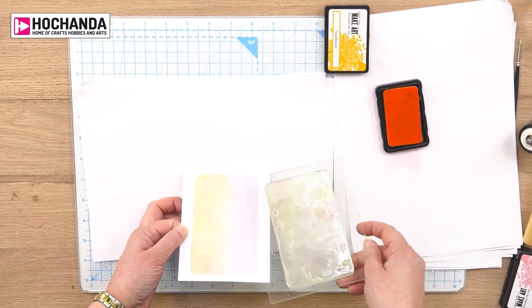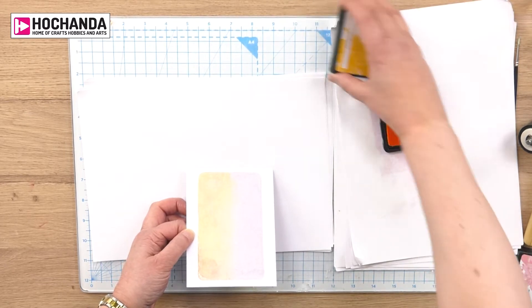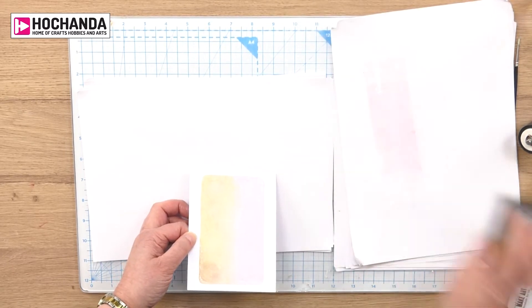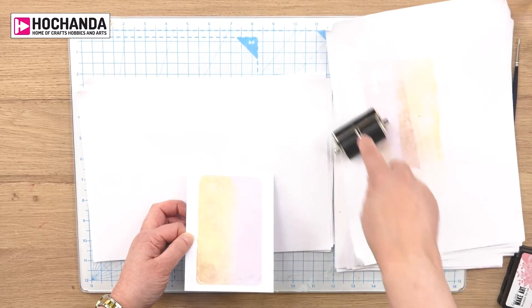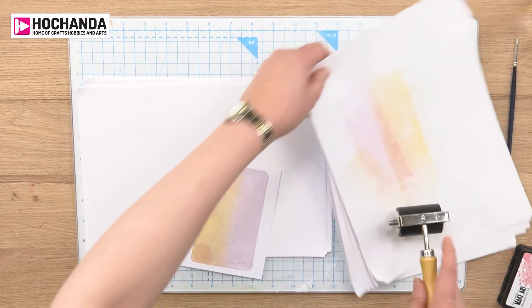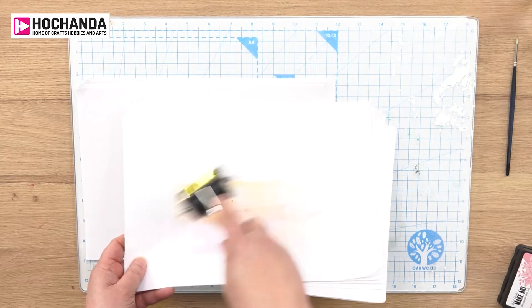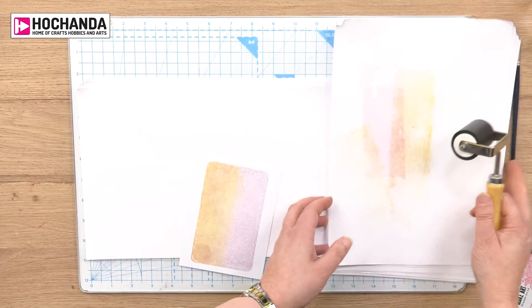You don't have to clean that, I'm just going to put that to one side, put my lids on and clean my brayer off. You see how on the paper you start building up color that would make a great background for stamping.